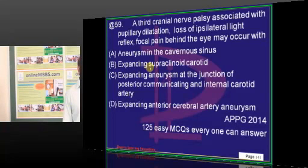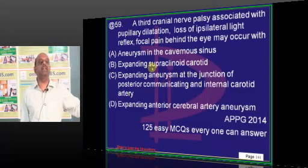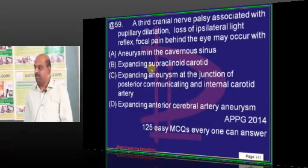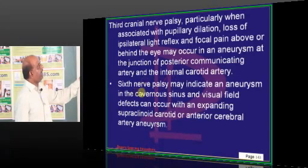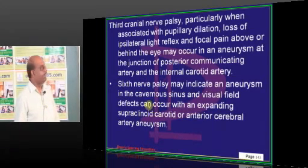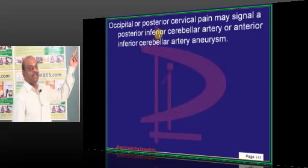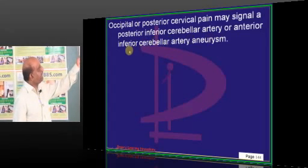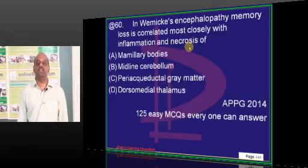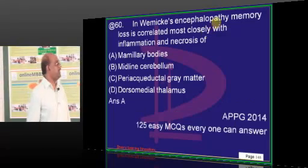Surgical and medical causes of oculomotor nerve palsy: the posterior communicating artery in the circle of Willis — its aneurysm leads to compression of the oculomotor nerve, which arises from the midbrain. The cavernous sinus is associated with sixth nerve palsy, not oculomotor. If there is occipital or postural cervical pain, you need to think of PICA or ACOS aneurysm. Remember the various aneurysms and their compressive features.